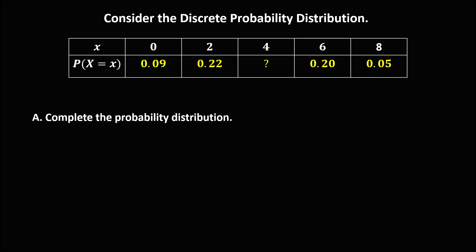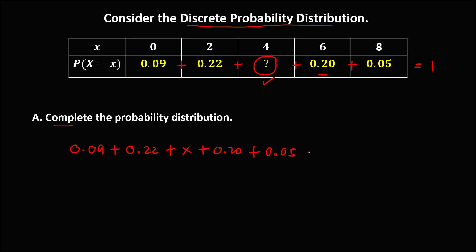Consider this discrete probability distribution. To solve for the unknown and complete the probability distribution, we use the property that the sum of all probabilities equals 1. So we have: 0.09 plus 0.22 plus x plus 0.20 plus 0.05 equals 1.